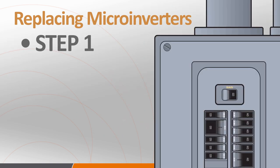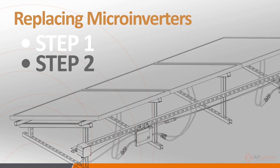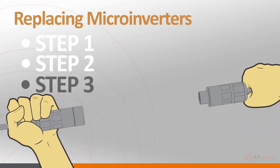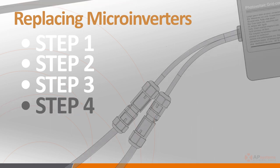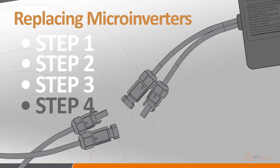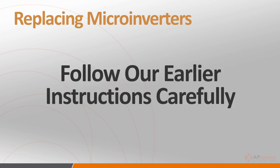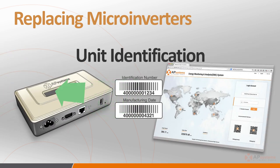To remove an inverter, follow these steps. Step 1: de-energize the AC branch circuit by turning off the branch circuit breaker. With the branch circuit offline, cover the PV modules associated with the inverter to be removed with opaque covers, ensuring the panels are not producing DC power. Next, disconnect the AC connectors to the adjacent inverters. Step 4: disconnect the DC connectors from the PV modules associated with the inverter. And finally, physically remove the inverter from the rack. Follow the installation procedures covered earlier to install the replacement inverter, making sure to change the inverter UIDs in the ECU and EMA to reflect the changes you've made.